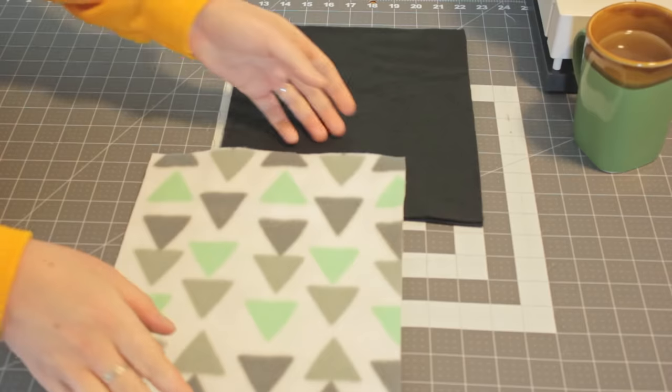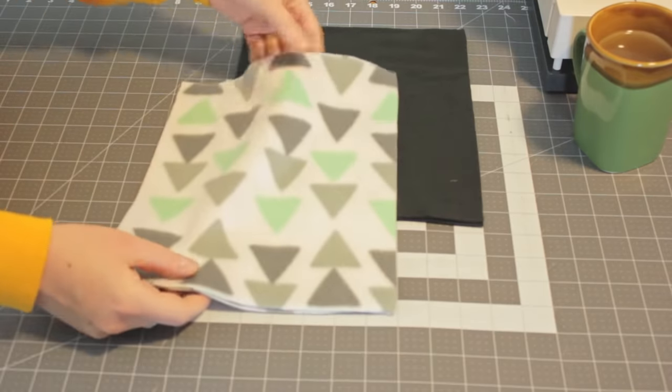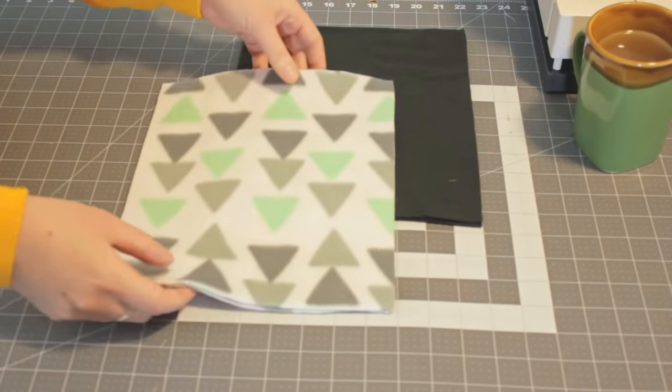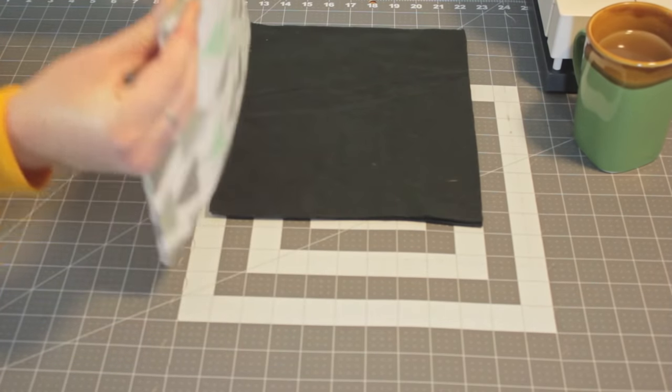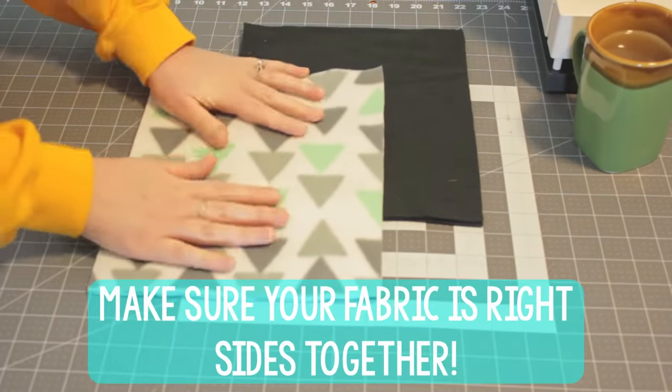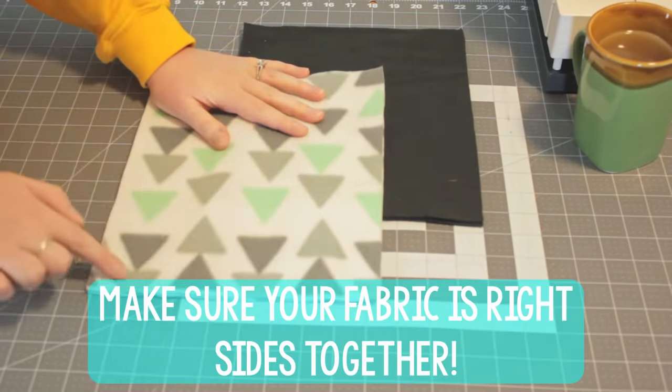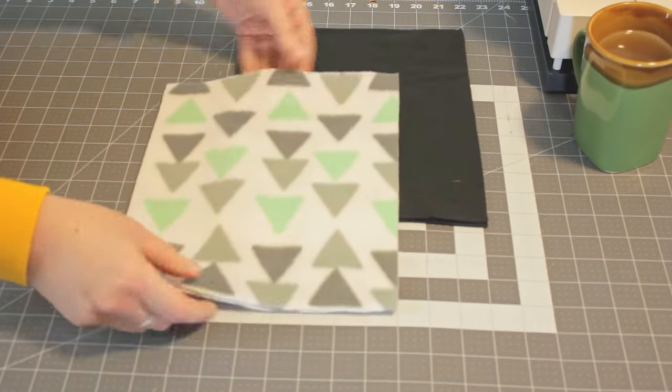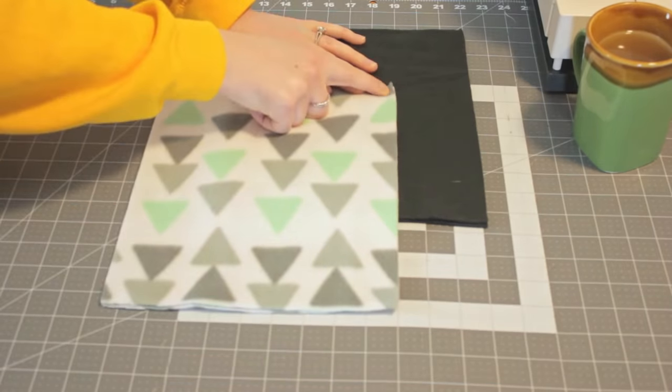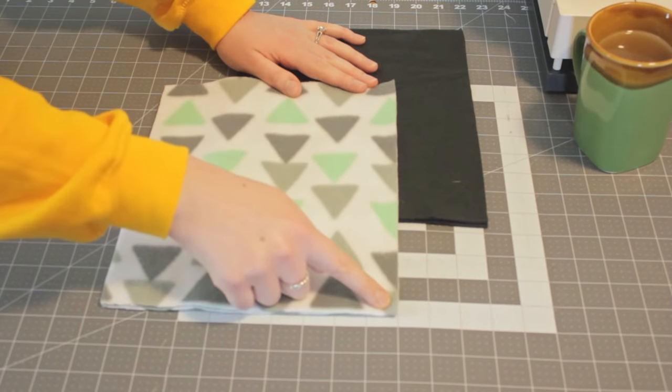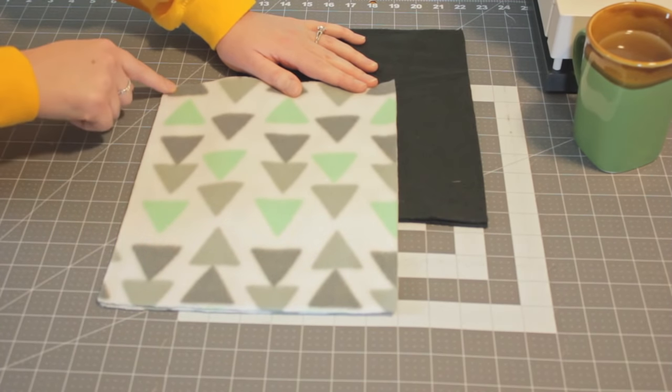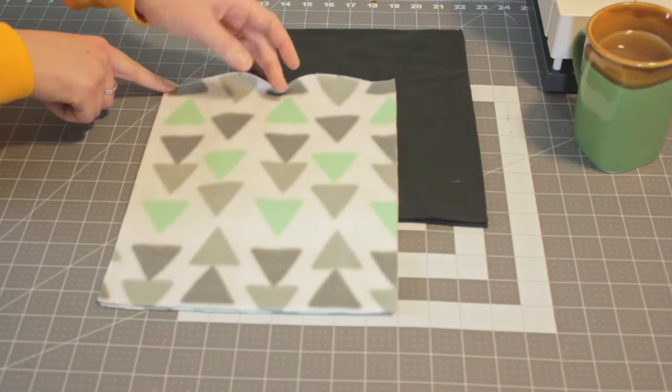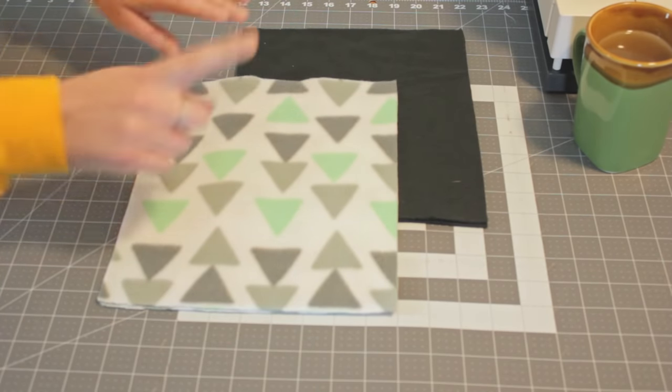We're going to go and sew these. I don't usually use pins when I'm dealing with fleece because the fabric likes to stick together. So you can really just line it up and run it through your sewing machine. You can also use pins around the edges or clips. What we're going to do is we're going to sew, starting at the top of one of the long edges. We're going to sew down, put our needle down and pivot at the corner. Sew a straight line, needle down and pivot, sew a straight line. So we're going to leave one of the short sides unsewn.